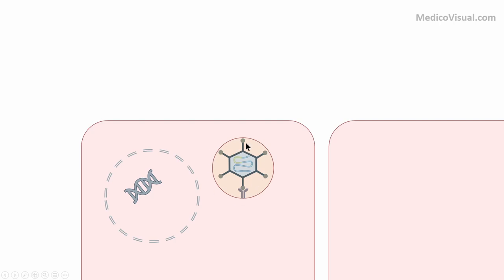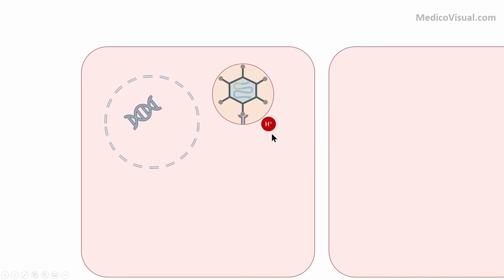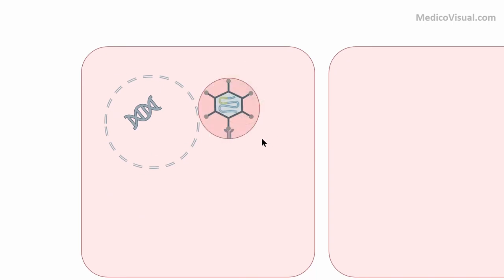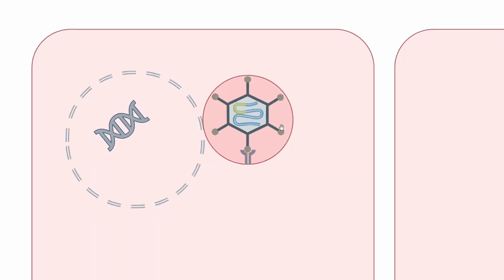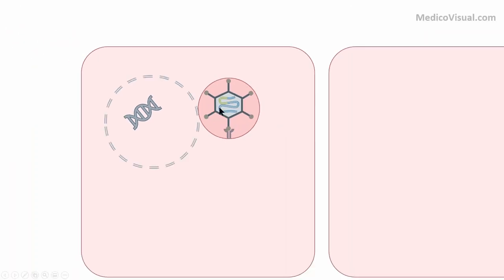The adenovirus is now trapped inside this vesicle. This vesicle has special channels that can pump protons into it, decreasing the pH. The change in pH will cause uncoating of this particle, and ultimately the nucleocapsid — the outer coat — will be removed, and the genome of this adenovirus will enter the cell.